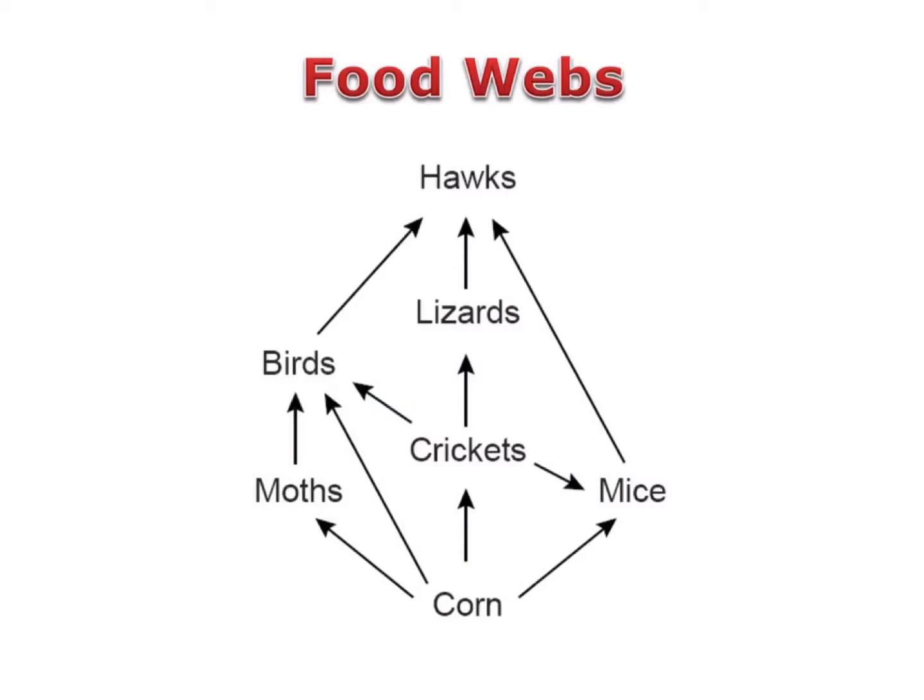Even though a food web shows more information than a food chain, they don't always give a complete picture of the interactions in an ecosystem. For example, this food web doesn't show decomposers, even though decomposers are an important part of every ecosystem. But even if food webs don't show a complete picture, they still provide great information about the populations within an ecosystem.